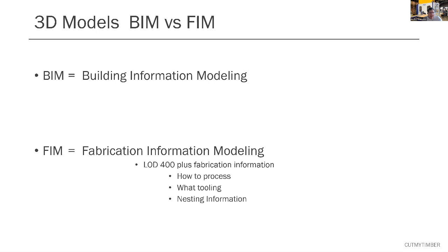We get a lot of people saying 'I have a 3D model, just feed it into your machine' — and that ranges from SketchUp models or 2D drawings twisted into 3D perspective views, all the way to fairly accurate BIM models. But as discussed in a previous presentation this week, most of those models lack fabrication information. What's additional in a fabrication information model compared to a highly detailed BIM model? Most people are familiar with LOD definitions — Level of Development — starting from LOD 100, 200, up to LOD 400 as essentially the highest model. LOD 500 is more for facility management and doesn't really add more fabrication data beyond 400.